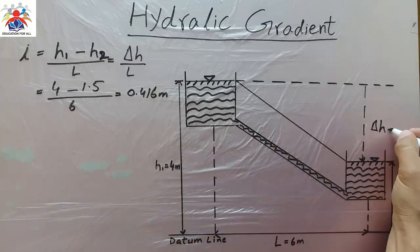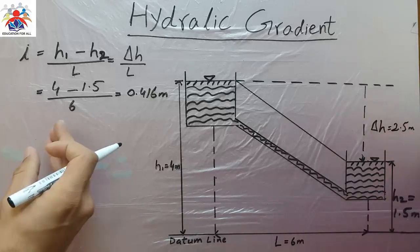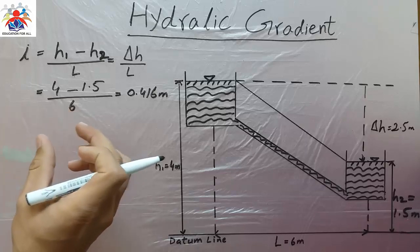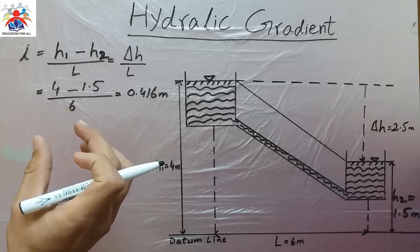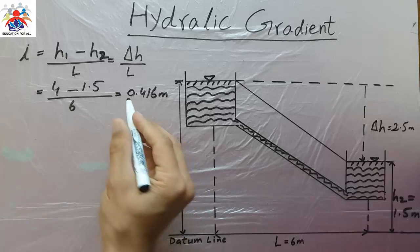If we divide it by the length we will get the initial point where our hydraulic gradient starts - where our highest elevation to the lowest elevation starts. We have got 0.416 and this is our start point of our hydraulic gradient.